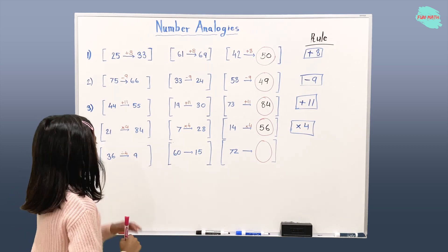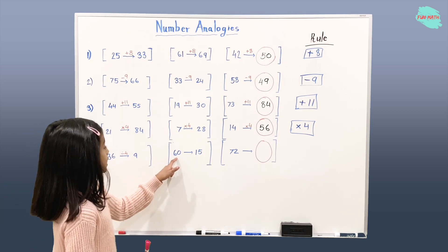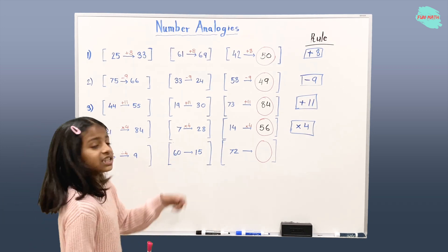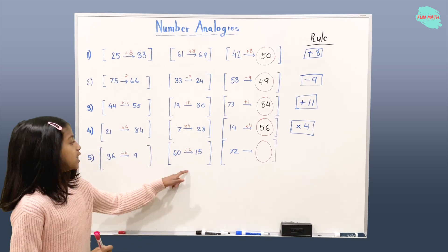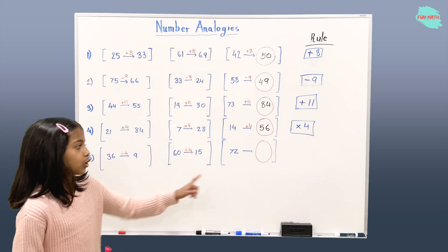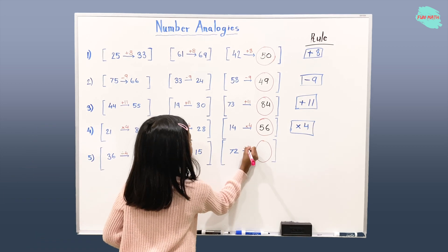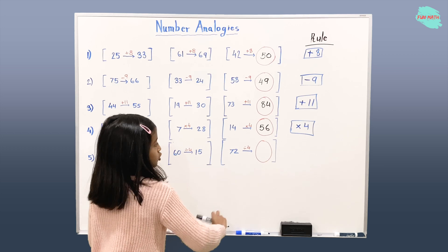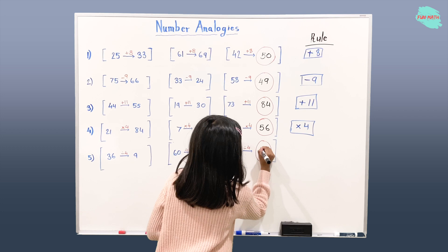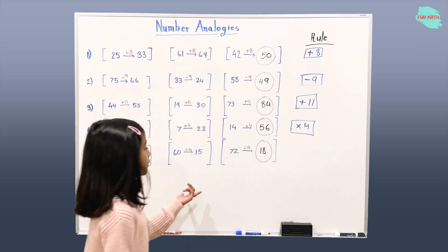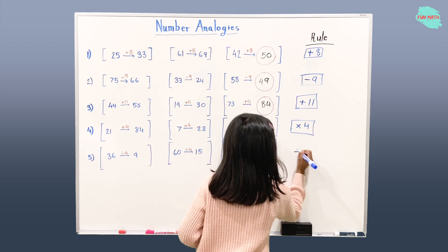So let's try applying divided by 4 over here. Is 60 divided by 4 equal to 15? That's correct. So since this rule applies in both groups, we're going to apply this rule over here: 72 divided by 4, which will give us — if you remember the multiplication table — 18. The rule here was divided by 4.